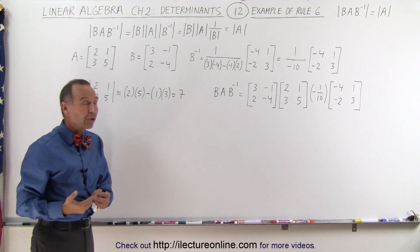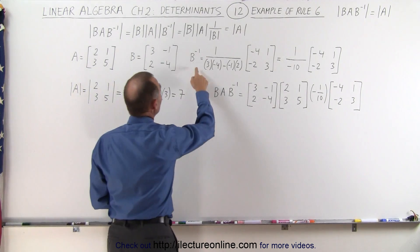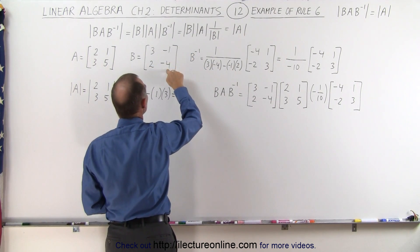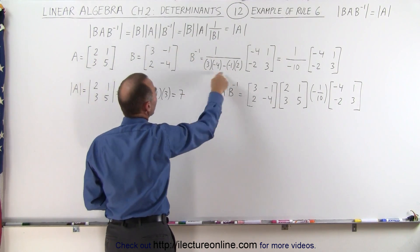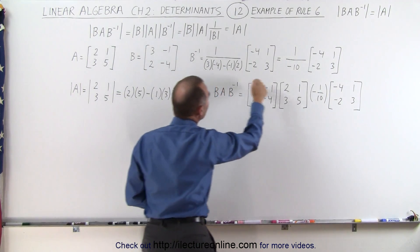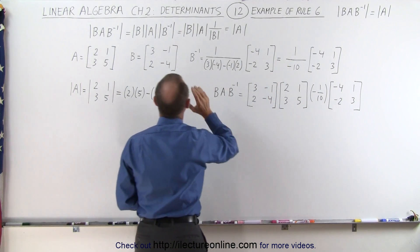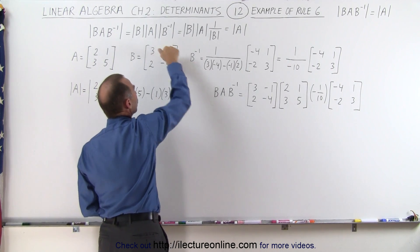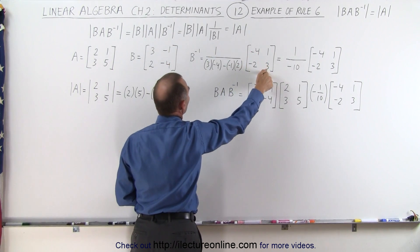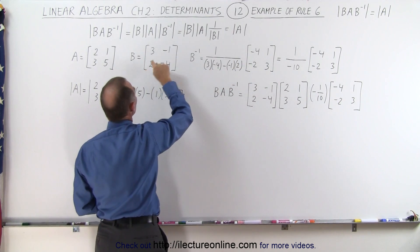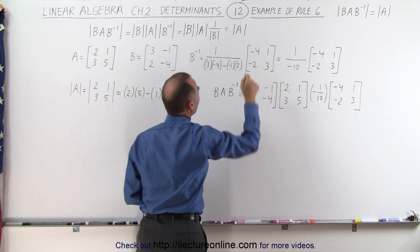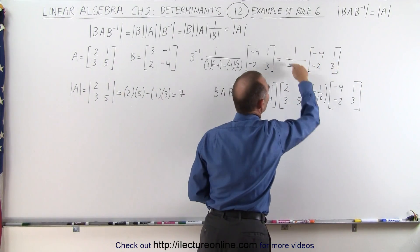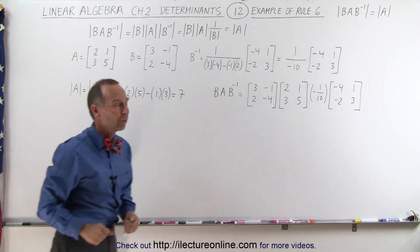Now the inverse of matrix B is equal to 1 over the determinant of B, which is the product of these two diagonal elements minus the product of those two diagonal elements, which ends up being 1 over negative 10, times the matrix B but with these two elements exchanged — the minus 4 comes up here, the 3 goes down there — and the signs change on these two elements: this becomes plus 1, this becomes negative 2. So you can see that this represents the inverse of matrix B.